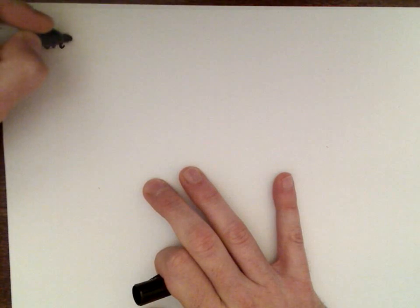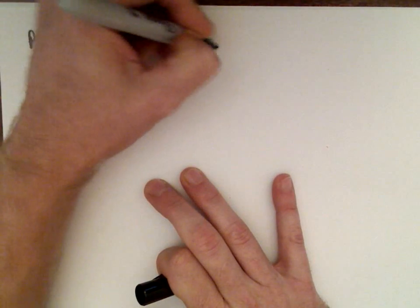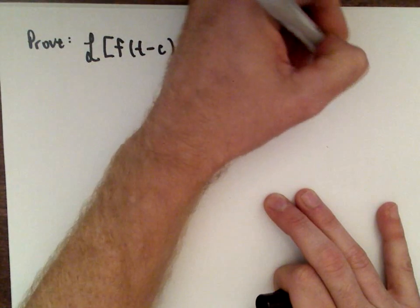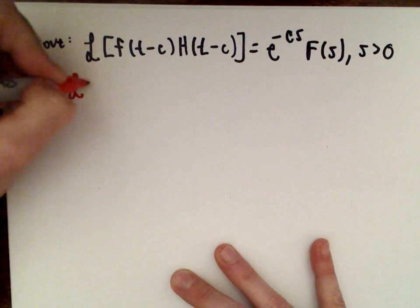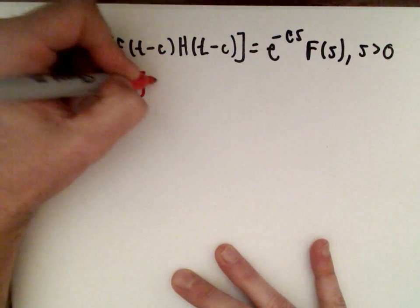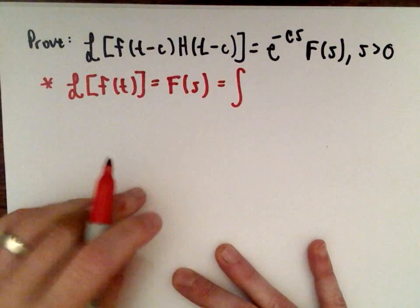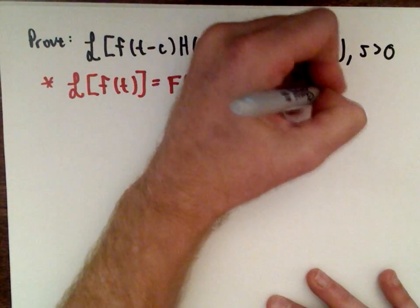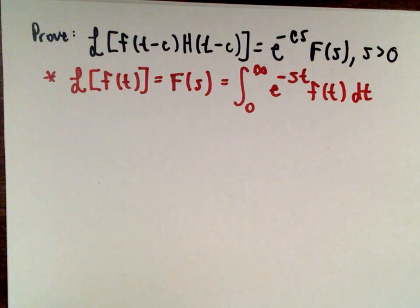So we want to show that the Laplace transform of f(t − c) multiplied by h(t − c) equals e to the negative c times s, multiplied by capital F(s), where s is greater than zero. Recall that the Laplace transform of a function f(t) is abbreviated capital F(s), and to compute it we integrate from zero to infinity: e to the negative s times t, multiplied by f(t), dt.